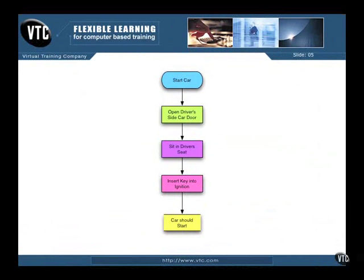But let's change the form a little bit and put it into a flowchart form. So a flowchart form, we start at the top here, and we have start car, and this particular object means it's essentially a starting point. And then these boxes mean different things occur. So the first thing again is open the driver's side car door, sit in the driver's seat, insert.